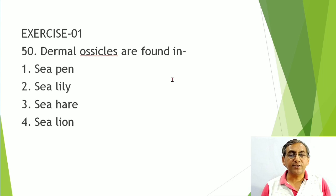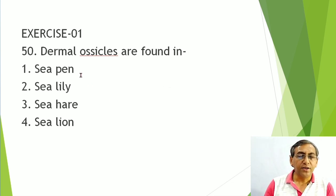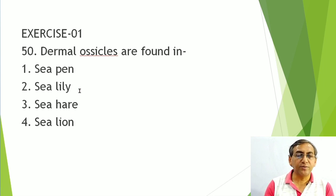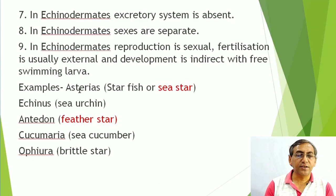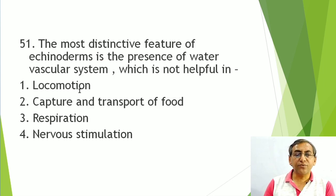Practice question: Dermal ossicles are found in Echinodermata. Among the options — sea pen, sea hare (Mollusca), sea lion (Mammal), and sea lily — the answer is sea lily, which is an example of Echinodermata. Remember, dermal ossicles/scales are present in sea lily.